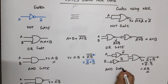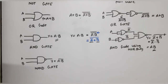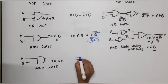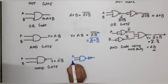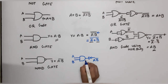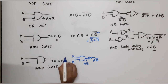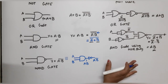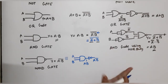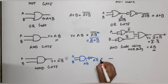Now NAND gate using NOR. NAND gate is equivalent to one AND gate plus one NOT gate — output is A dot B bar. We already have AND gate using NOR and NOT gate using NOR, so we combine both.